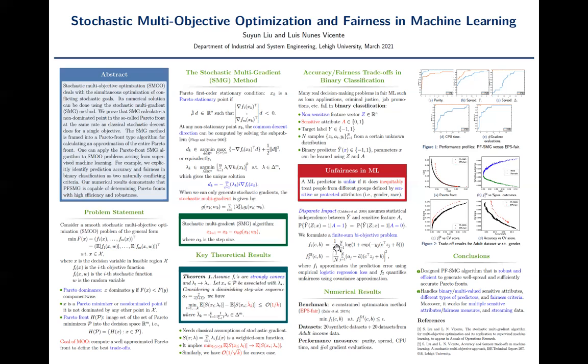Based on the definition, we can formulate a stochastic bi-objective program in the form of finite sum. Here, the first objective is just calculate the prediction error using the empirical logistic regression loss. And the second objective quantified the unfairness value using the covariance approximation.